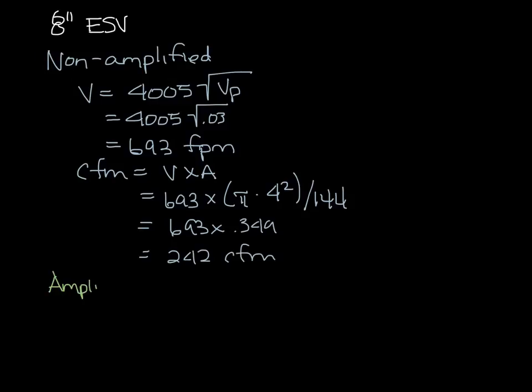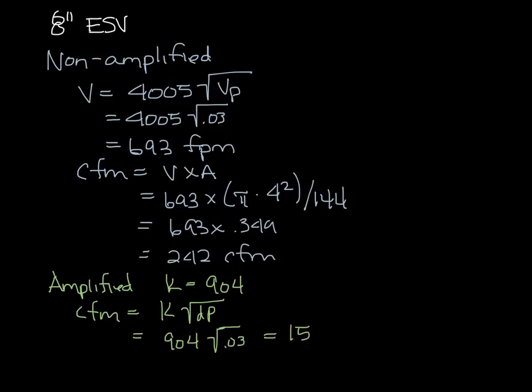Now let's look at the amplified signal. To calculate the amplified signal, you just need to know the k-factor and the pressure differential. For an 8-inch aero cross-flow sensor, the k-factor is 904. So the CFM equals the k-factor times the square root of the delta P, which is 904 times the square root of the 0.03. And that comes to 157 CFM.